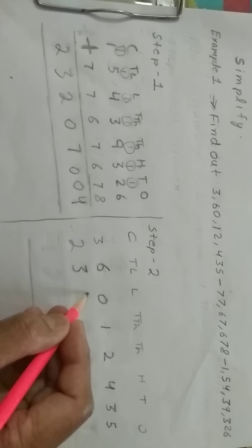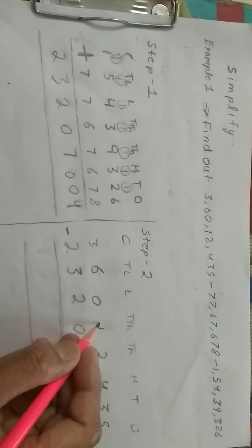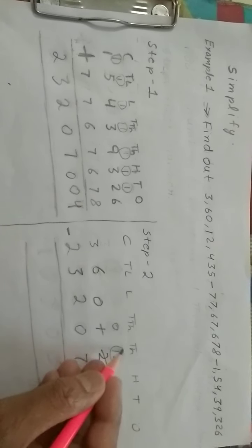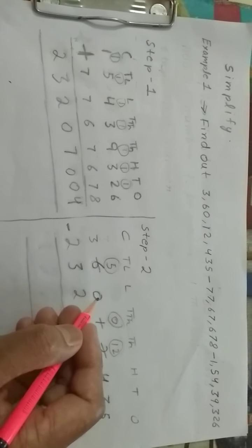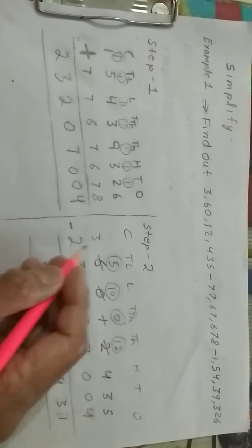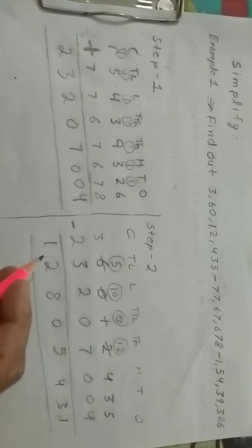This sum, 2,32,07,004, we will subtract from 3 crore 60,12,435. Setting up: 5 minus 4 is 1. 3 minus 0 is 3. 4 minus 0 is 4. Now this 2 is smaller than 7, so 2 will borrow 1 from the next digit; that 1 becomes 0 and 2 becomes 12. Counting up: 12 minus 7 is 5. 0 minus 0 is 0, but this 0 needs to borrow 1 from the 6; that 6 becomes 5 and 0 becomes 10. 10 minus 2 is 8. 5 minus 3 is 2. 3 minus 2 is 1. So our answer is 1,28,05,431.